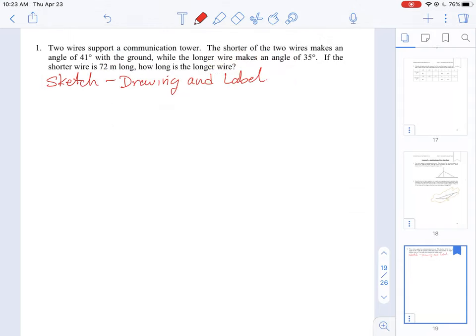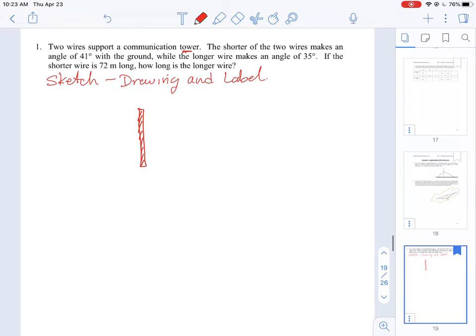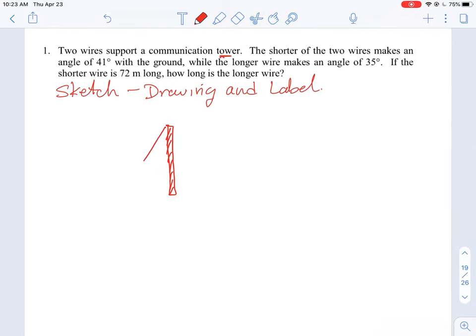The first statement says two wires support a communication tower. So the tower is probably an important feature, so we'll draw something to represent a tower and sketch it out. It says the shorter of the two wires makes an angle of 41 degrees with the ground. So we'll sketch a wire to the ground like this and mark it with one mark and label it as 41 degrees.